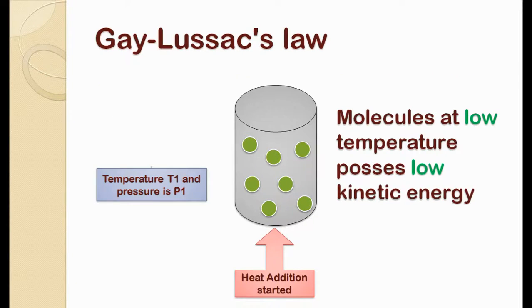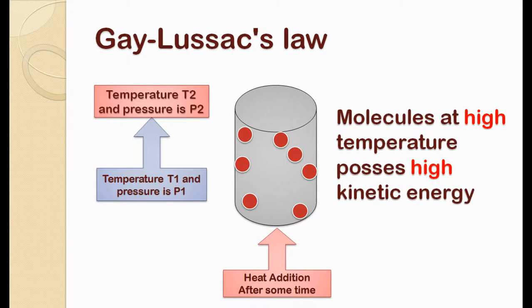This is the image of a cylinder with few gas molecules inside it. The cylinder is made up of thick plates so that volume of gas always remains constant. At the current stage, temperature of gas is T1 and pressure is P1. For understanding purposes, consider gas is at room temperature. Since gas is at room temperature, kinetic energy of gas molecules is low.